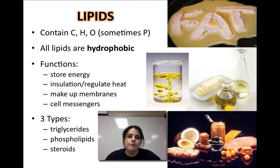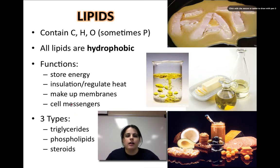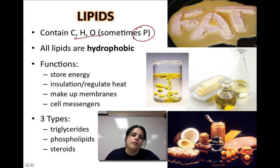Let's talk about lipids. Lipids are made out of very similar things as carbohydrates. They're made out of carbon, hydrogen, and oxygen, just like the carbs. However, there is a group of lipids that also has phosphorus.